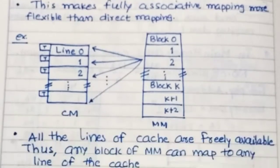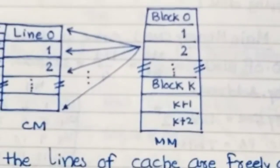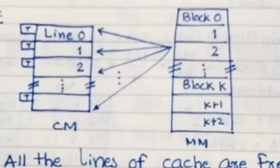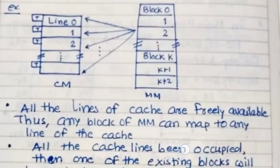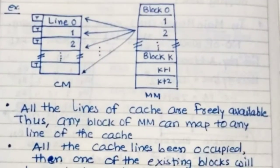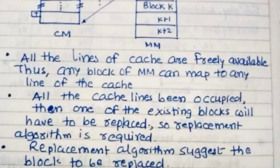As shown in the figure, here main memory blocks and cache memory are shown. All the lines of the cache are freely available. Thus any block of main memory can map to any line of the cache. If all cache lines are occupied, then one of the existing blocks will have to be replaced. So a replacement algorithm is required.